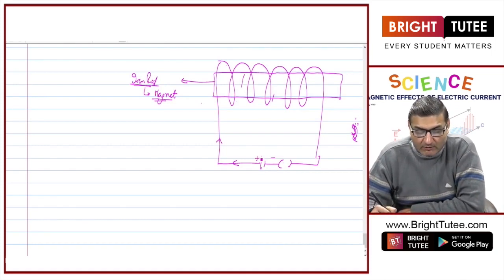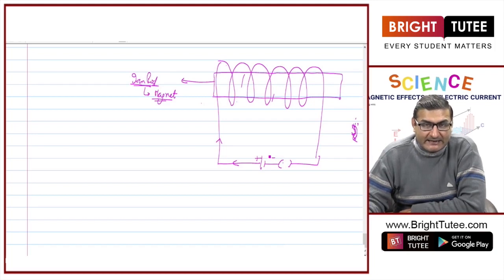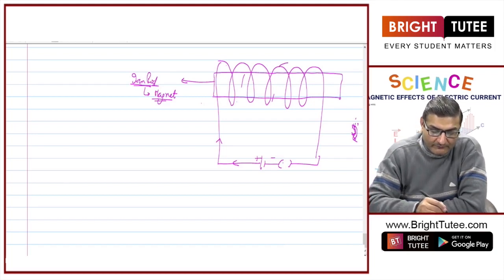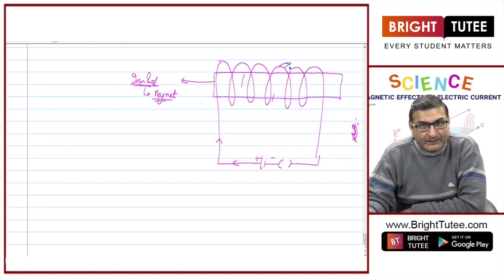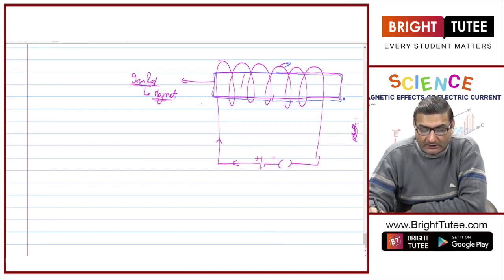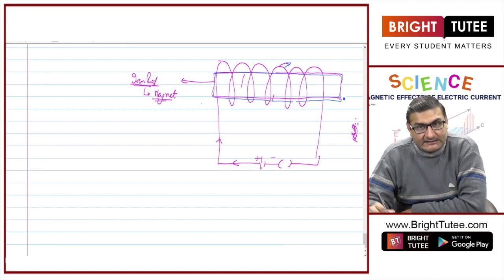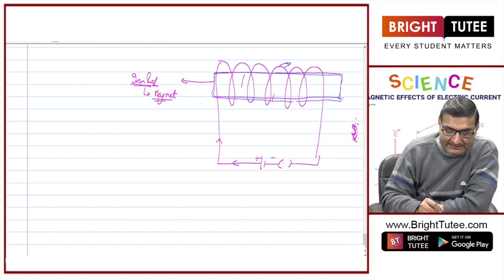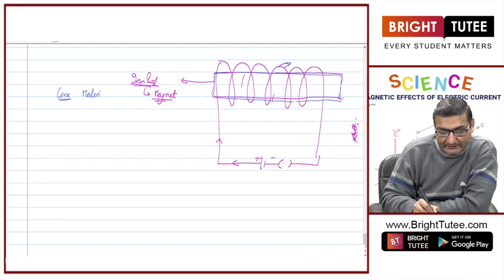When I switch on the current, the magnetic field is produced by the coil of the solenoid. That magnetism is basically taken up by this soft iron or iron rod, and this iron rod becomes a magnet. This iron rod which is placed inside is also known as the core material.